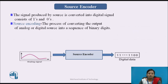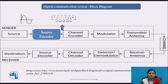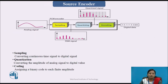The next block is the source encoder. The signal produced by the source is converted into a digital signal consisting of 1s and 0s, using as few binary digits as possible. This process — converting the output of an analog or digital source into a sequence of binary digits — is called source encoding. The source encoder consists of three blocks: a sampler, which converts the continuous-time signal to digital; a quantizer, which converts the amplitude of the analog signal to a digital value; and an encoder, which assigns a binary code to the quantized signal.